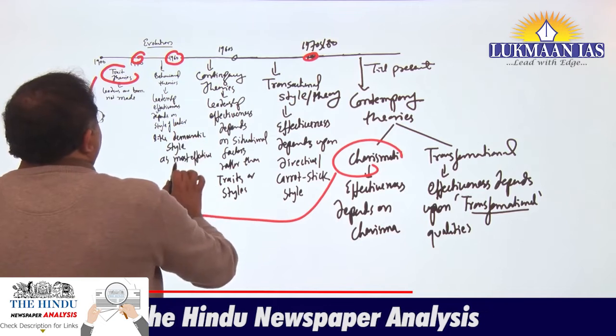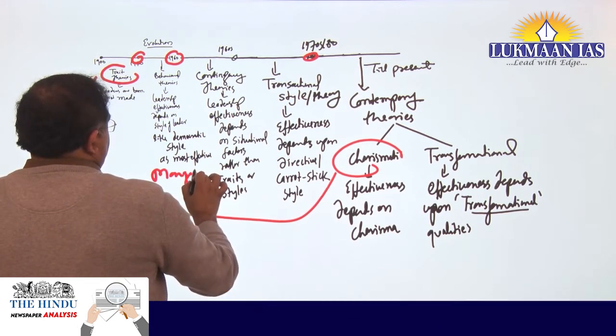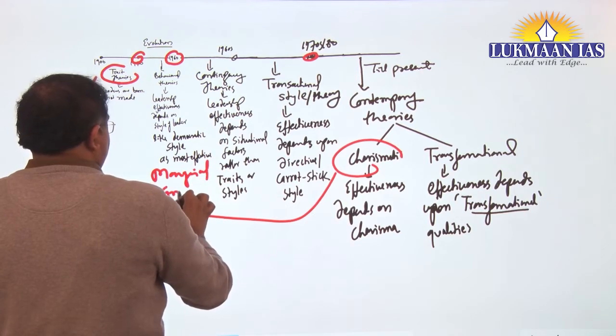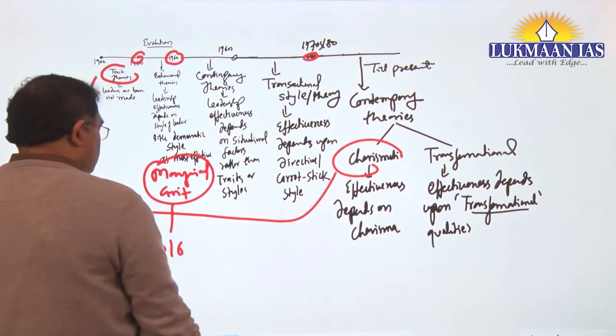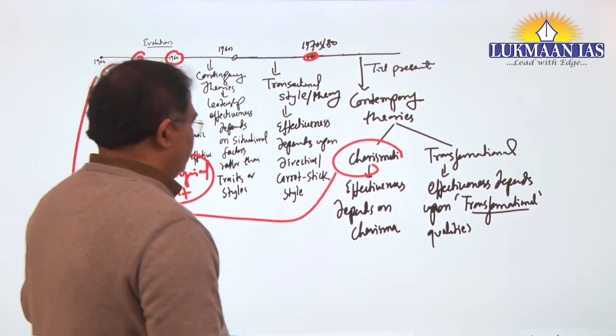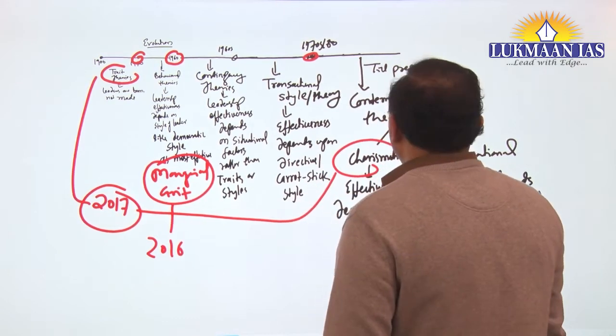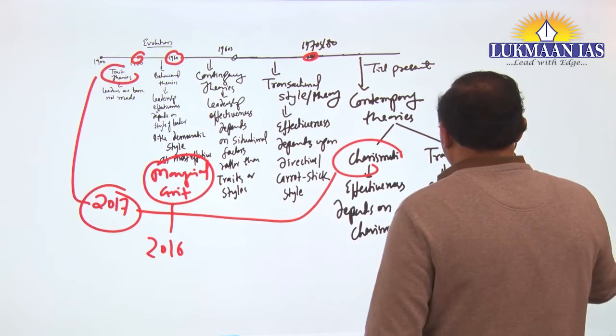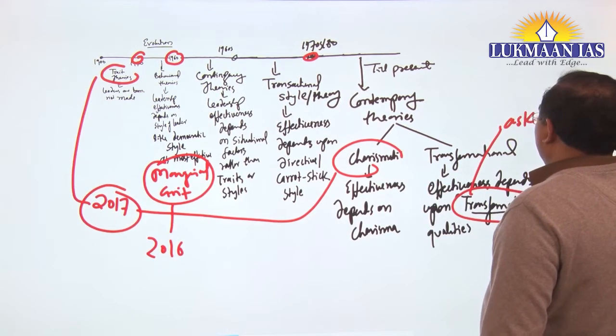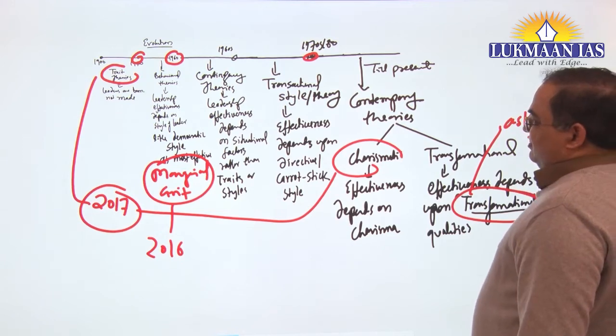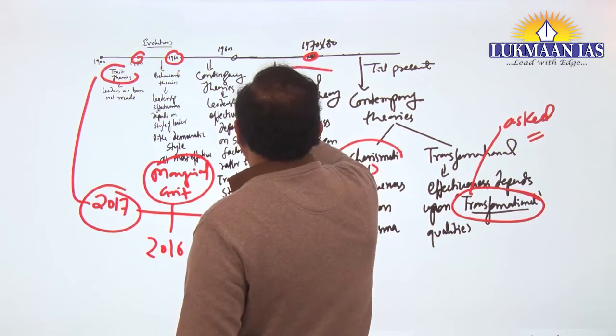In the behavioral style, there is managerial grid. It was asked in 2000, 2016 it has been asked - years can be here and there. That has also been asked. We have been expecting this question.